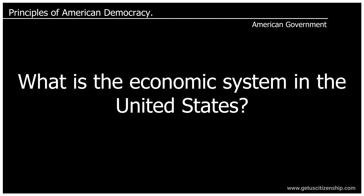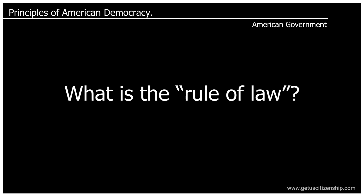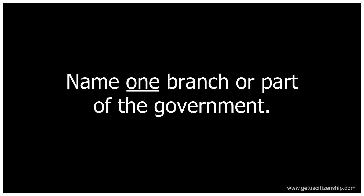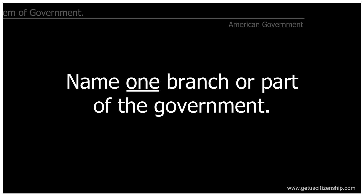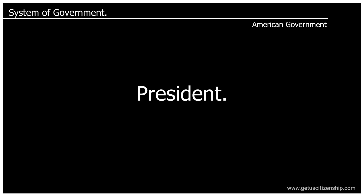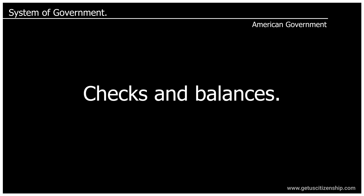What is the economic system in the United States? Capitalist economy. What is the rule of law? No one is above the law. Name one branch or part of the government. President. What stops one branch of government from becoming too powerful? Checks and balances.